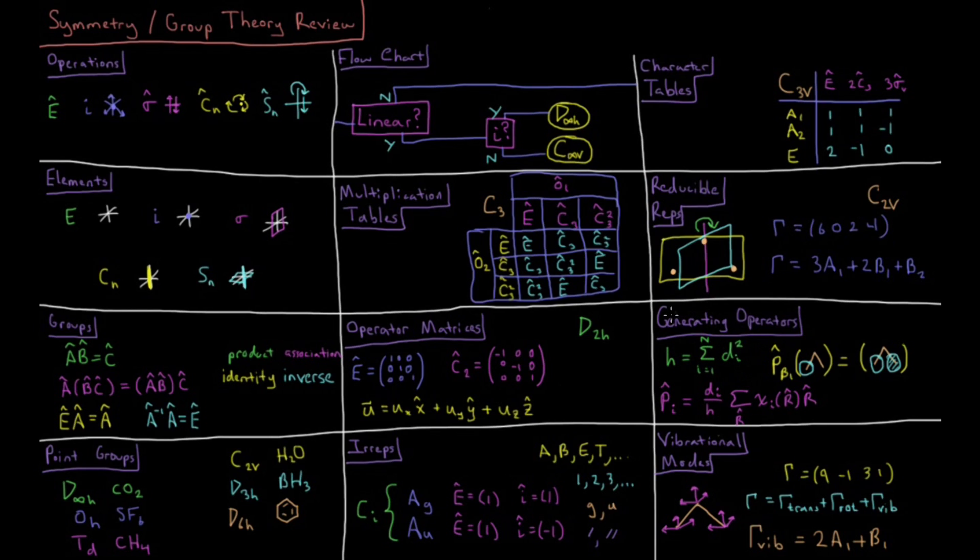If we have a given set of orbitals, for example of a molecule, we can figure out the linear combinations of them which comply and form the various irreps of the molecule by using generating operators. For example,